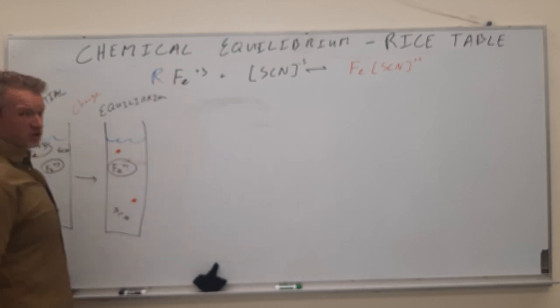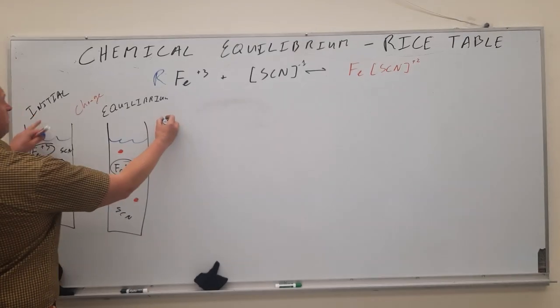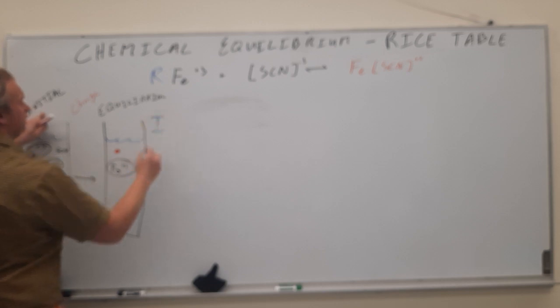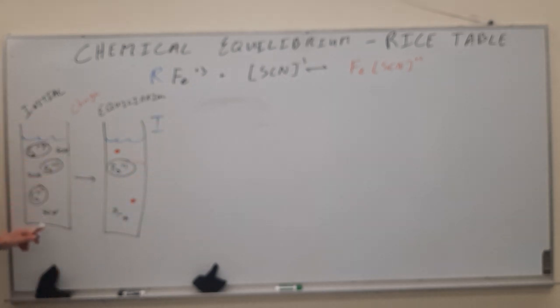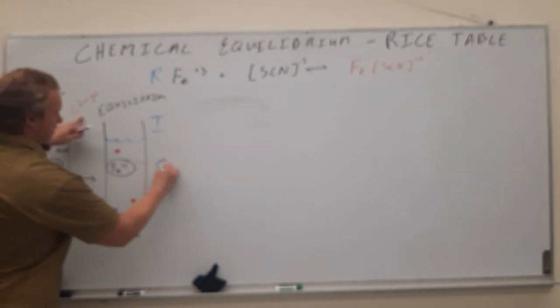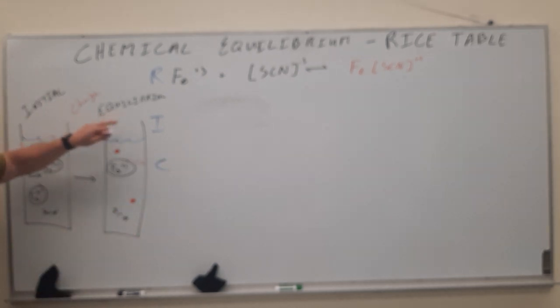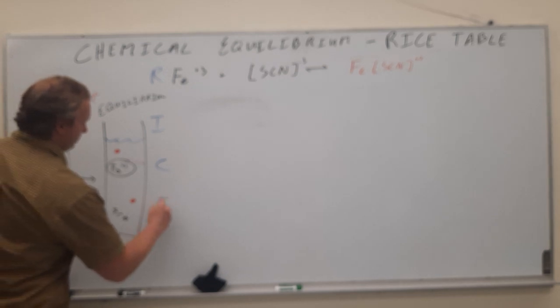And now here we see all of our letters of the RICE table. The reaction, the initial molarities or concentrations, the change, and the equilibrium, the molarities at equilibrium.